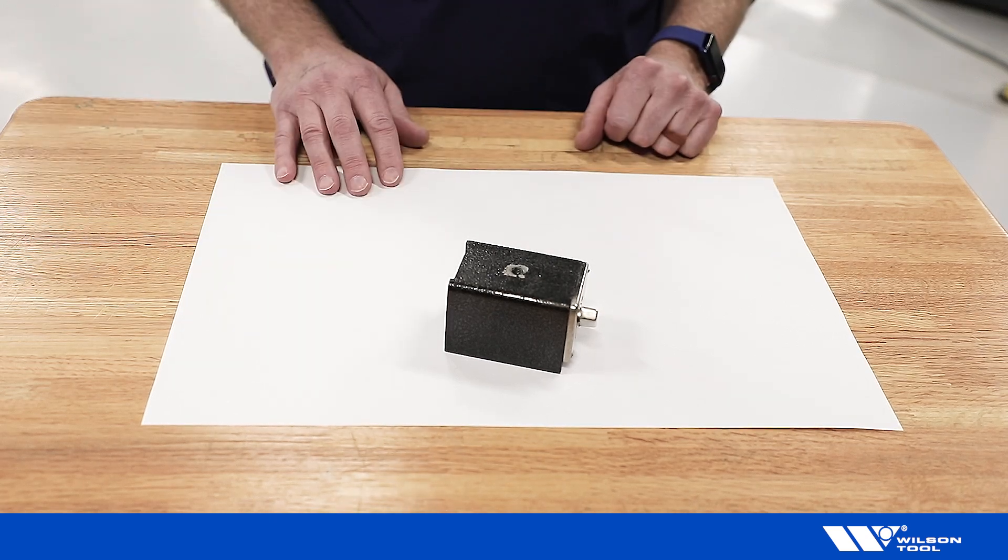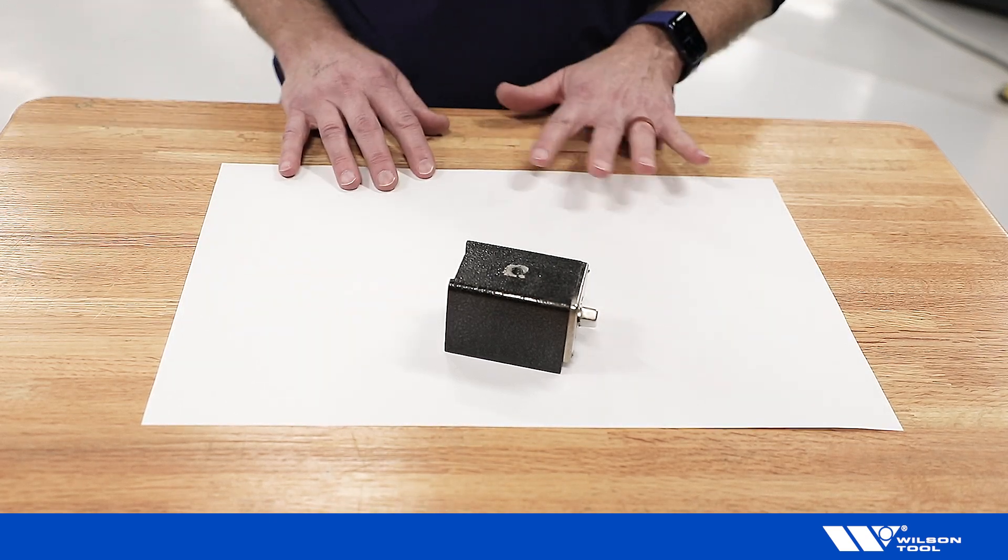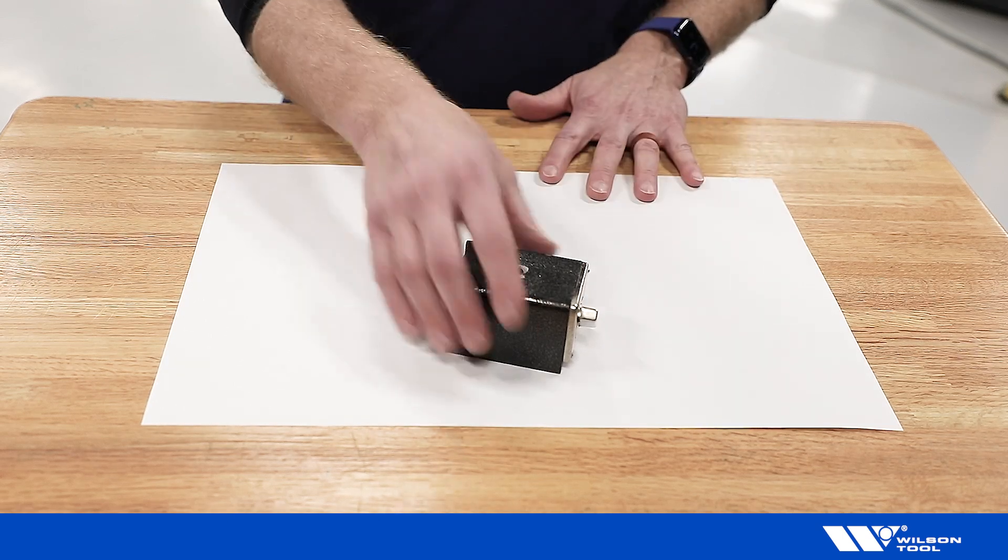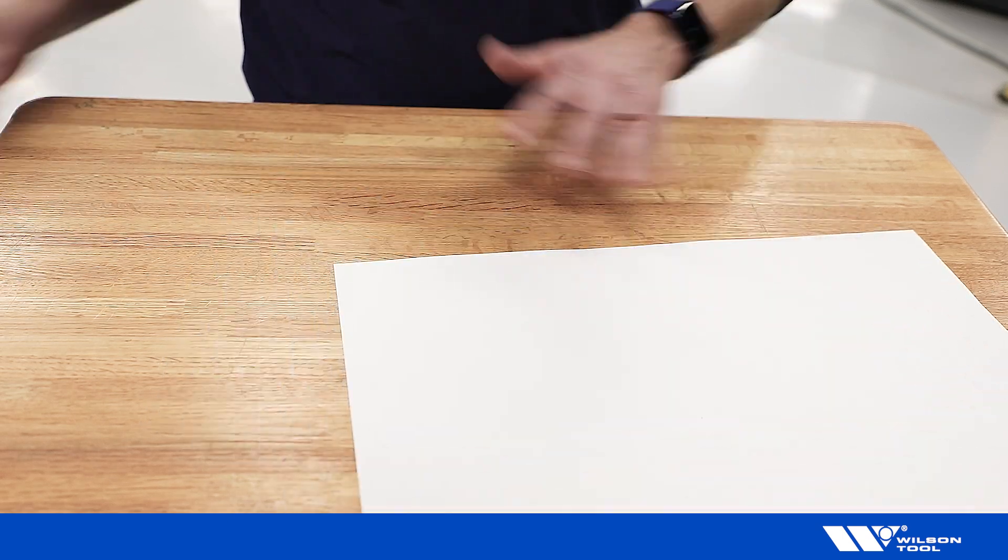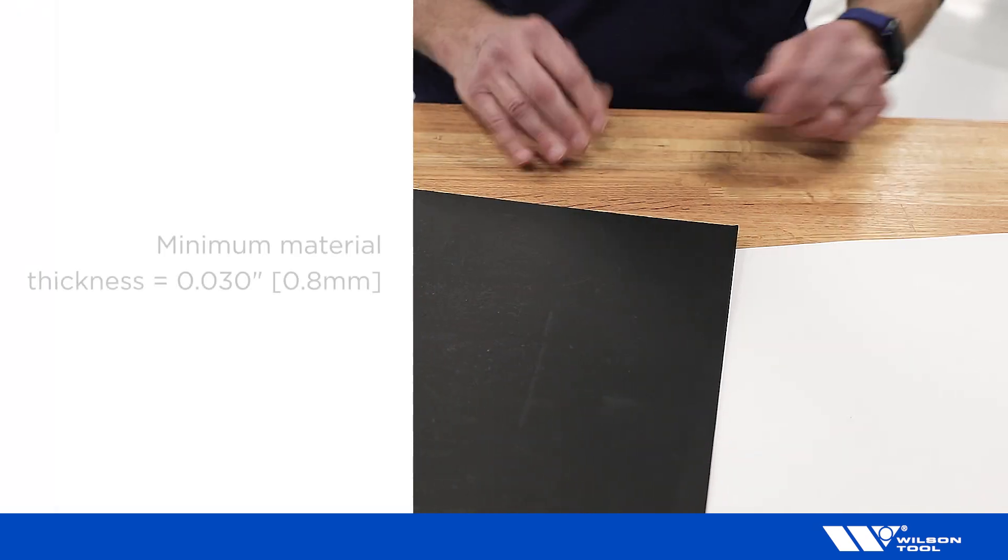So I think that makes sense as far as what's happening when that material is too thin. Now where's the cutoff point? We've pretty much decided that around 0.030 inches or 0.8 millimeters is kind of the cutoff.